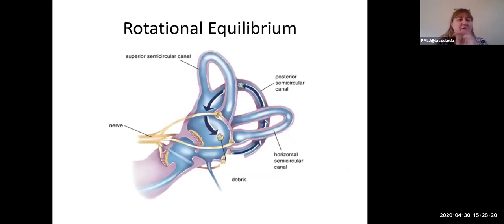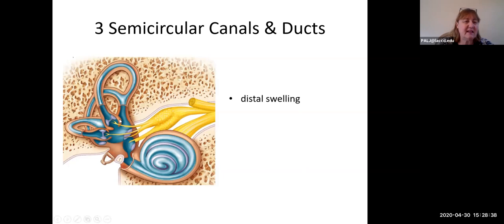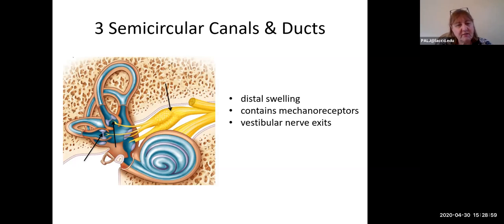To refresh your memory, for rotational equilibrium we're going to have three semicircular canals. Let's go look at the distal end because that distal end has a swelling which we haven't talked about before. Inside that distal swelling you see this thing here that looks like a purple little barbell, and that basically is the shape of the area that contains the mechanoreceptors. Attached to this you can see the vestibular nerve exiting, and in this picture you clearly can see the vestibular nerve joining up with the cochlear nerve from the cochlea, which we've already talked about. Then those two together are going to form the vestibulocochlear nerve.